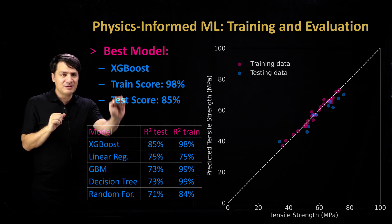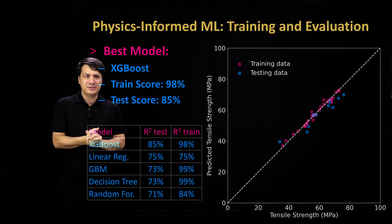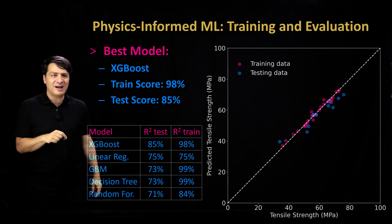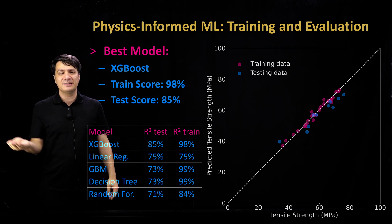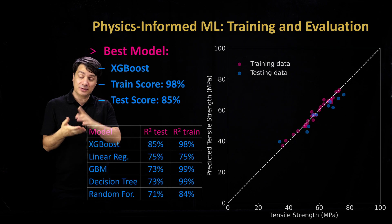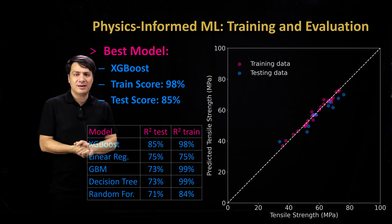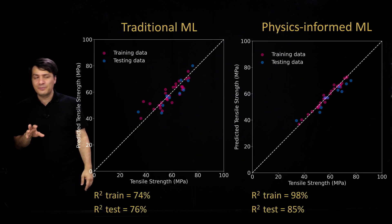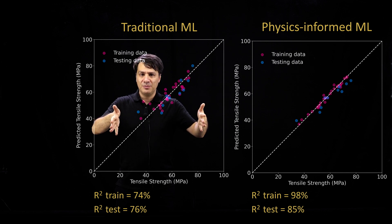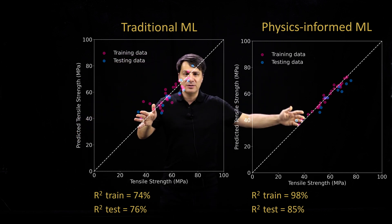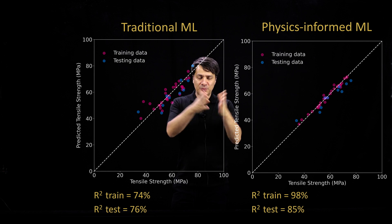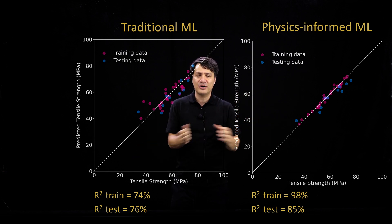The same approach as before was applied — five types of models trained with hyperparameter optimization. The best model is the boosting approach, XGBoost, which gives an R² of 85%, significantly higher than before. By adding just one additional physics-informed input — the flow index — the accuracy of the model increases substantially. Comparing the two: the left plot shows the original four-input model, and the right shows four inputs plus the physics-informed flow index. You can clearly see how the spread around the 45-degree line is reduced and the accuracy has increased.